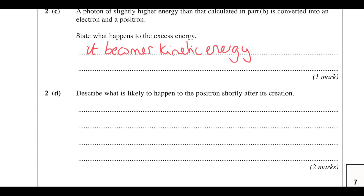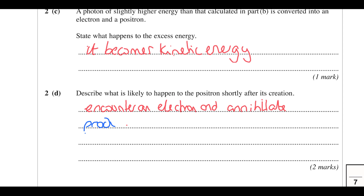Describe what happens to the positron shortly after its creation. Pair production happens when a photon interacts with matter, and matter contains electrons, so the positron is going to collide with an electron and annihilate, producing two photons — and it's always exactly two.